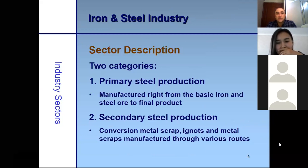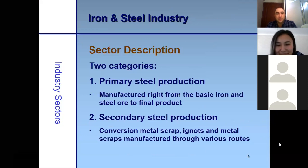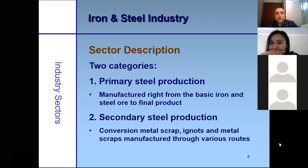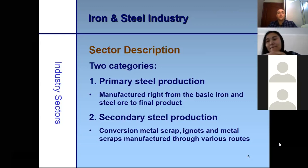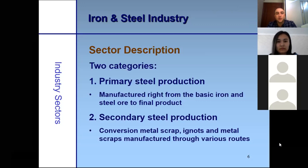The iron and steel industry can be divided into two categories: primary and secondary steel production. In primary steel production, steel is manufactured directly from basic iron to steel or to final products. The industry produces primary steel in integrated steel plants, manufacturing final products in the form of billets, angles, channels, rods, and so on. Secondary steel manufacturing involves conversion of metal scrap and manufacturing it into formed products.